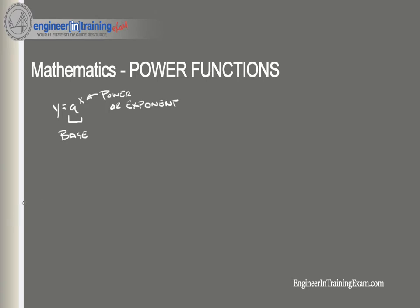When a power function strays from standard form, we can use a list of rules to simplify. The first rule is the power of products: if the base is a product of two numbers, say a times B, raised to the X power, it can be rewritten as a raised to the X times B raised to the X. Additionally, if we have a product of two power functions of the same base raised to different powers — a raised to X times a raised to W — we can add the exponents, rewriting it as a raised to the X plus W.